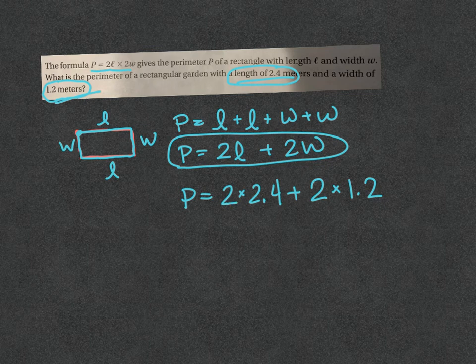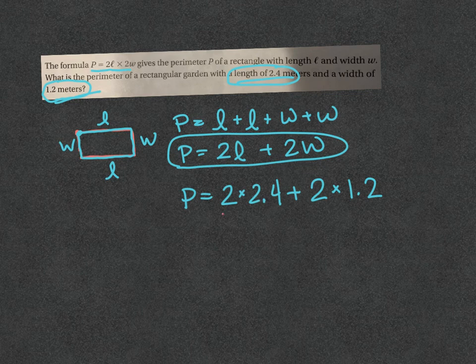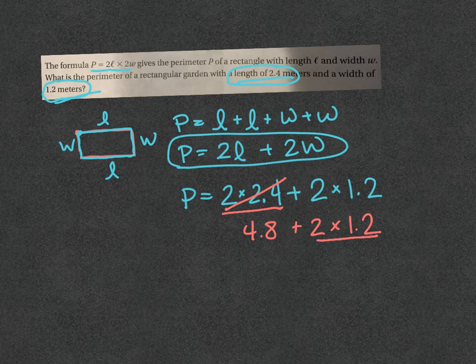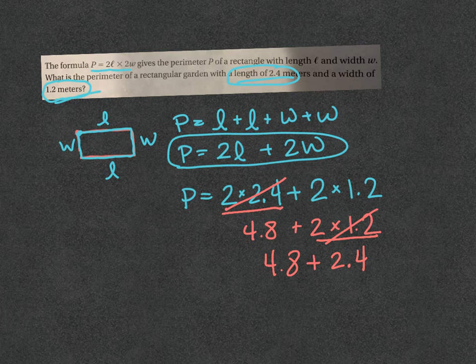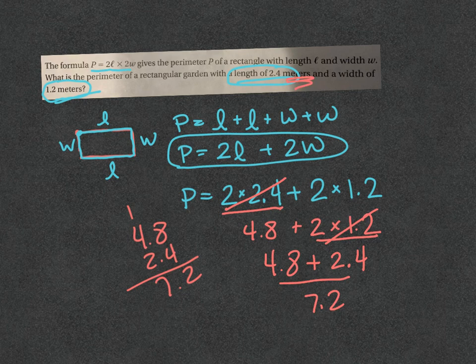Now I use order of operations. No parentheses, no exponents. Multiply or divide whichever comes first going left to right. 2 times 2.4 is 4.8. Bring down what you haven't done yet. Still on multiplication: 2 times 1.2 is 2.4. Now the last thing is addition: 4.8 plus 2.4 equals 7.2. And remember, it was a measurement of meters, so the answer is 7.2 meters.